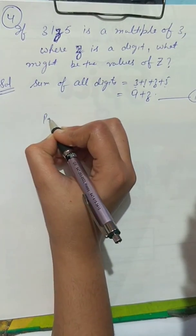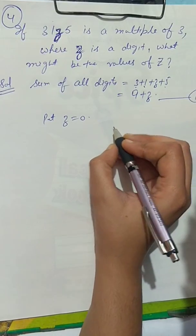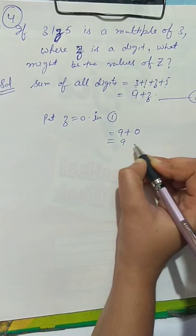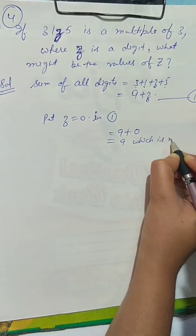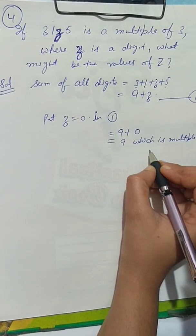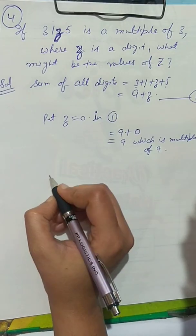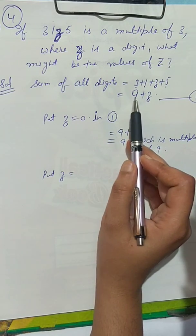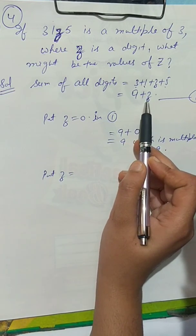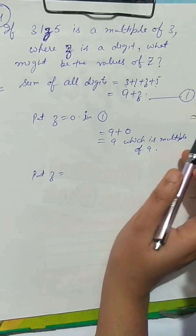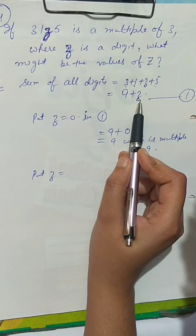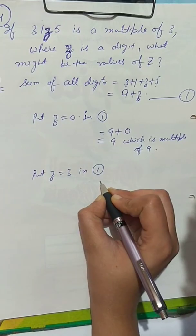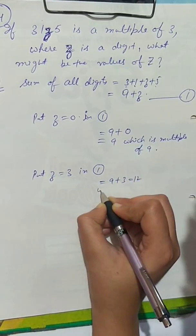Now put z = 0: 9 + 0 = 9, which is a multiple of 3. Then try z = 1: 9 + 1 = 10, not in table of 3. z = 2: 9 + 2 = 11, no. Put z = 3: 9 + 3 = 12, which is a multiple of 3.